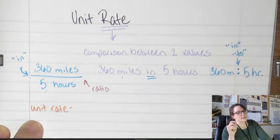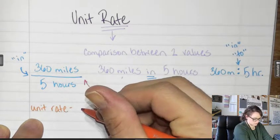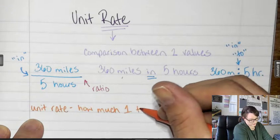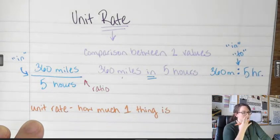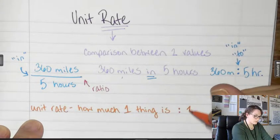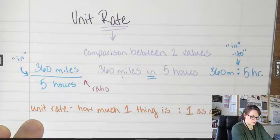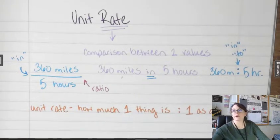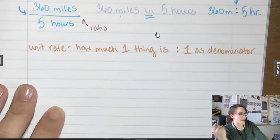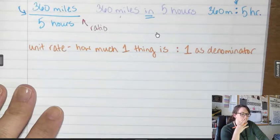A unit rate is determining how much one is. You'll have a one as the denominator. Figuring out how much one is. So as with miles per hour, we're figuring out how many miles you can travel in one hour. That's a unit rate.